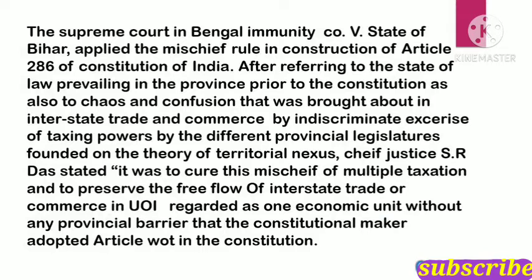Let's look at examples so it becomes clearer. The case is Bengal Immunity versus State of Bihar. In this case, Article 286 of the Constitution of 1949 was in question. Because earlier, each state had its own taxing powers, the Supreme Court said that Article 286 was made by the constitutional makers so that interstate trade and commerce could be well organized and the entire Union of India could be made a single economic unit. The Supreme Court considered both the history of Article 286 and the reason behind it — applying the mischief rule.